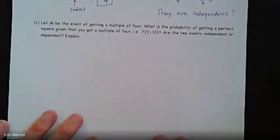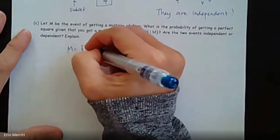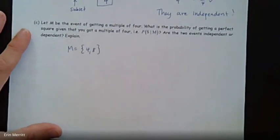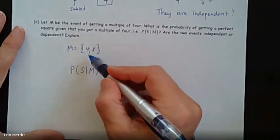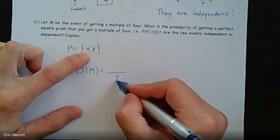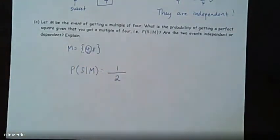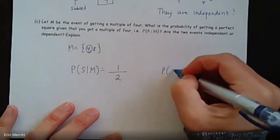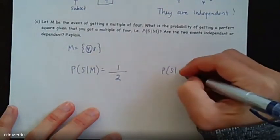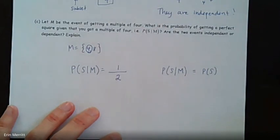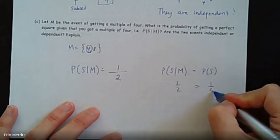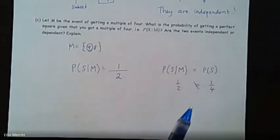Let M be the event of getting a multiple of four. Multiples of four on the spinner would be four and eight. What is the probability of getting a perfect square given that you got a multiple of four? Given that you're in that category, there are only two numbers there, and one of them is a perfect square — so it's a one out of two chance. Is that the same as the probability of just spinning a perfect square? That was one-fourth. One-half does not equal one-fourth, so they are not independent — they are dependent.